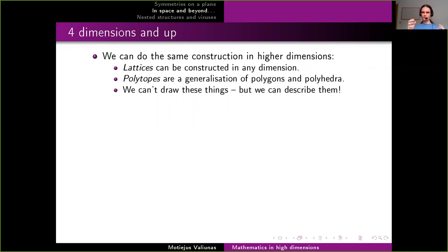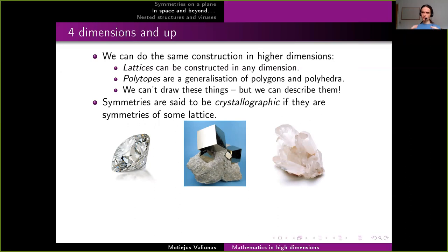First of all we need to define things, since we can't draw them. But using mathematics we can describe in any dimension we want the same things we saw in the pictures in two and three dimensions. We can describe in particular what it means for a lattice to exist, and we can also describe something called polytopes, which are a generalization of polygons and polyhedra — these exist in any dimension. Our aim is to find finite objects that have the same symmetry as some lattice. We call symmetries of such a polytope crystallographic.